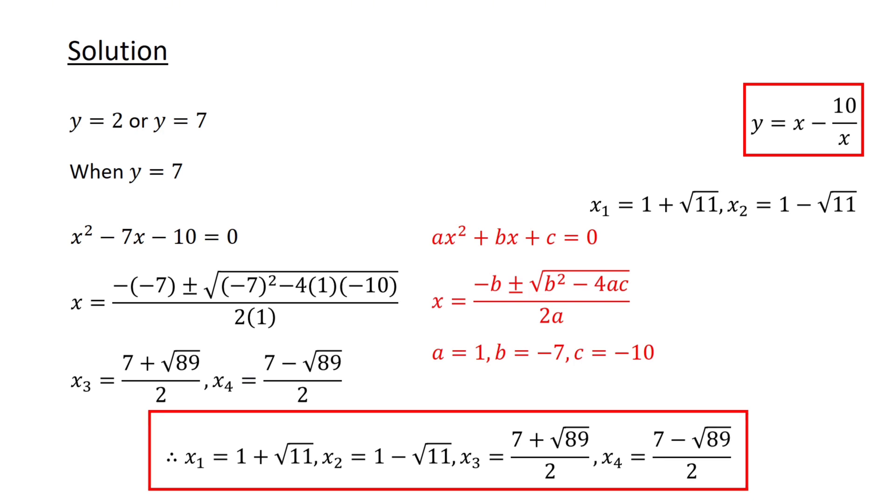Therefore, the solutions to our original equation are 1 plus root 11, 1 minus root 11, 7 plus root 89 over 2, and 7 minus root 89 over 2.